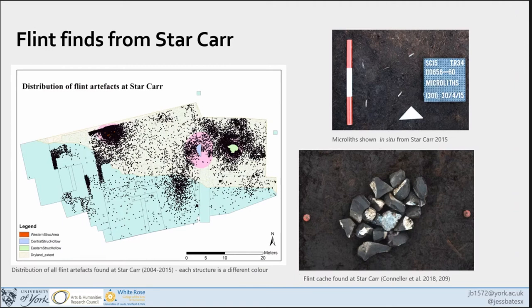Now onto the flint, which is why it's relevant to the session today. There were over 24,000 flints found, and as you can see by the black dots, a lot of these are located within the dry land areas of the site — which is why my research is really focused within these areas as these are the hot spots. The colours in the dry land areas represent the structures, and the black dots are really quite concentrated around these areas. Most of the flint was made from till flint, and it's worth noting that 16 percent of the assemblage was burnt, which obviously has implications for the microwear analysis.